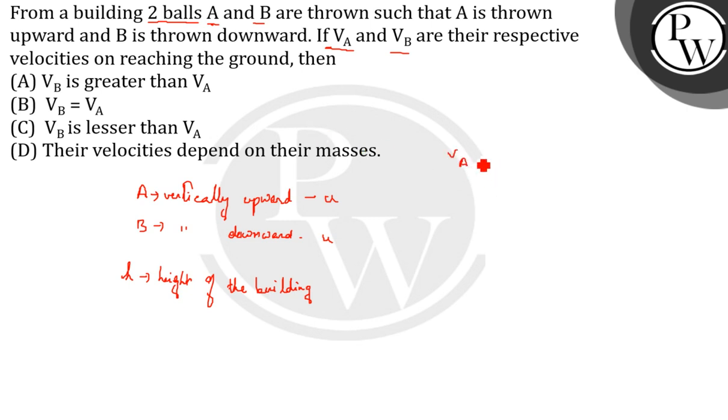VA will be—we will use the third equation of motion: VA² = u² + 2gh, or we can write VA = √(u² + 2gh).